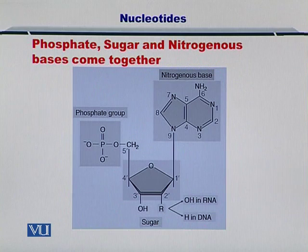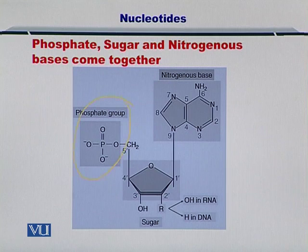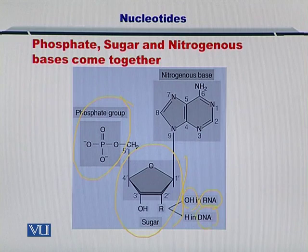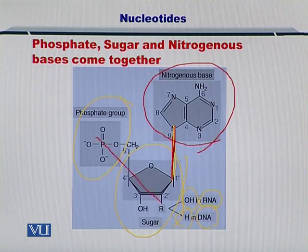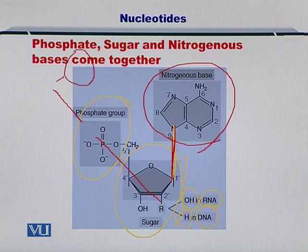Now, how do these phosphates, sugars and nitrogenous bases — or these nucleotides — come together? If you see here carefully, the phosphate group is shown here and the sugar is shown here. In case of RNA you will have an OH here, while in case of the DNA you will only have a hydrogen here. On top of this, the nucleotide base comes and attaches itself. In this way, the phosphate-sugar-phosphate-sugar chain continues and newer nucleotides come and attach themselves, and the DNA or the RNA molecule is constructed.